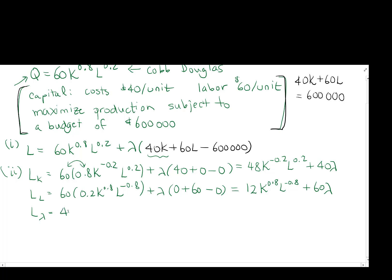And L lambda, nice and simple, we just rewrite our constraint because the derivative of lambda with respect to lambda is just 1. So really this whole thing is being times by 1. That's 1 times that whole expression, so it just becomes itself, it just becomes 40K plus 60L minus 600,000.